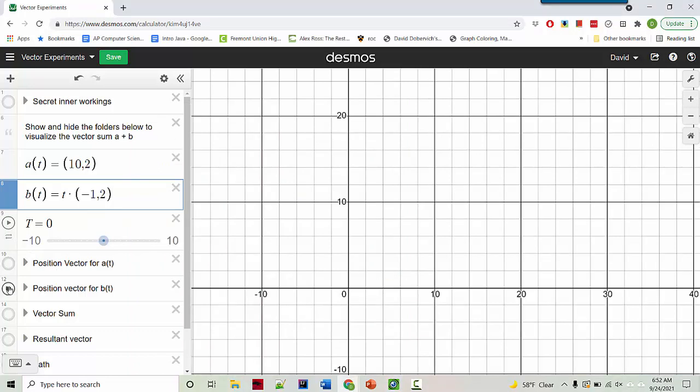So you can show and hide these different folders to visualize different pieces of this. So here's the position vector a of t. You can see it there. Here's the position vector for b of t. And you notice that there's nothing there. But that's because time is 0.